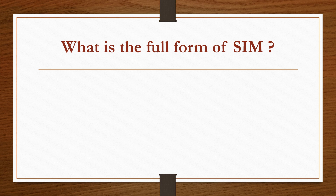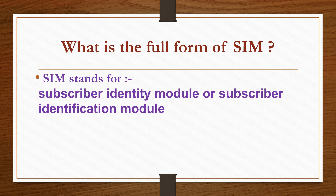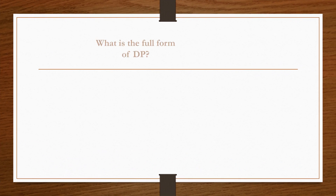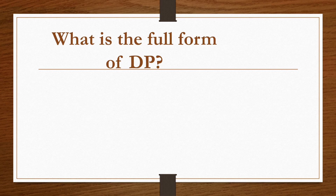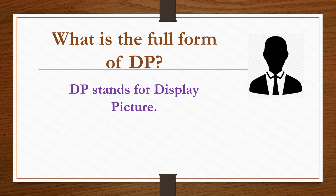What is the full form of SIM? SIM stands for Subscriber Identity Module or Subscriber Identification Module. What is the full form of DP? DP stands for Display Picture.